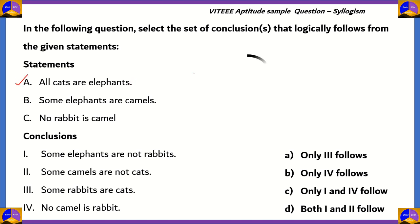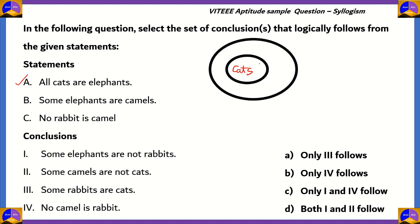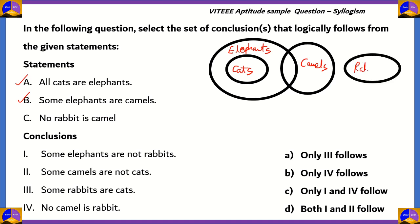First statement: all cats are elephants. We take a small circle, write cats inside — this represents the set of cats. Since the statement says all cats are elephants, this small set will be completely inside a larger set marked elephants. The next statement, some elephants are camels, means the set of elephants overlaps with another set called camels. Finally, statement C says no rabbit is a camel, meaning the sets rabbits and camels do not intersect or overlap at all.